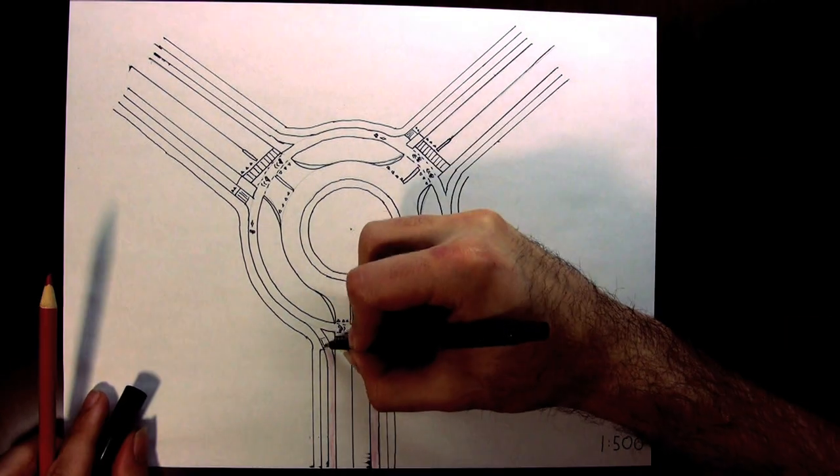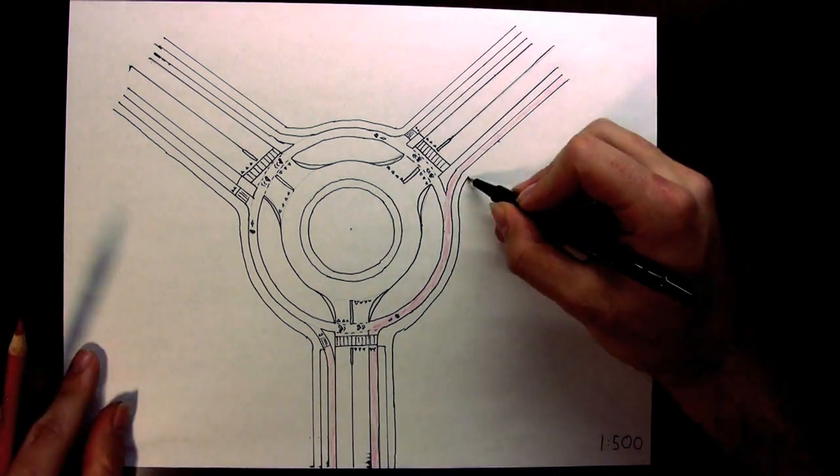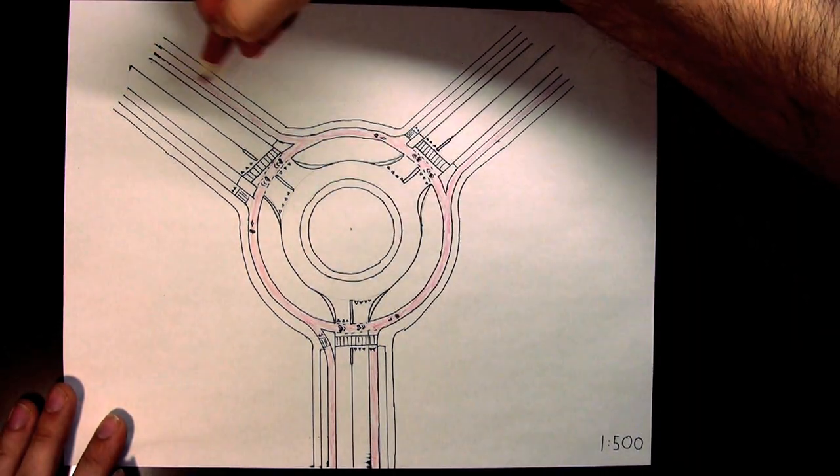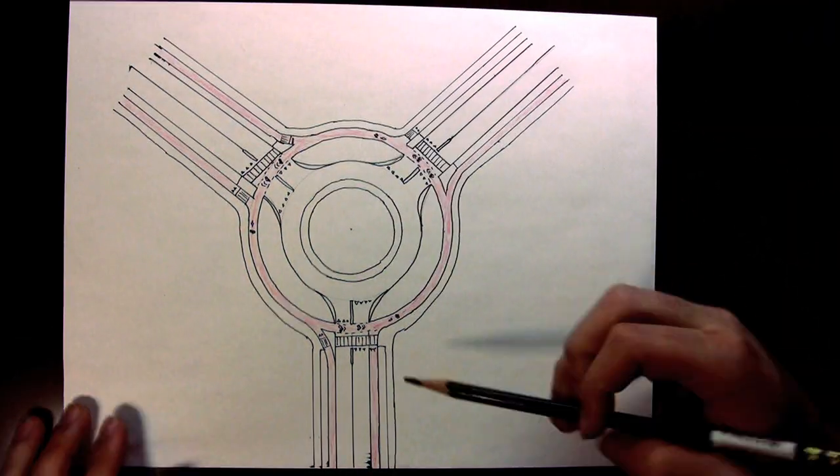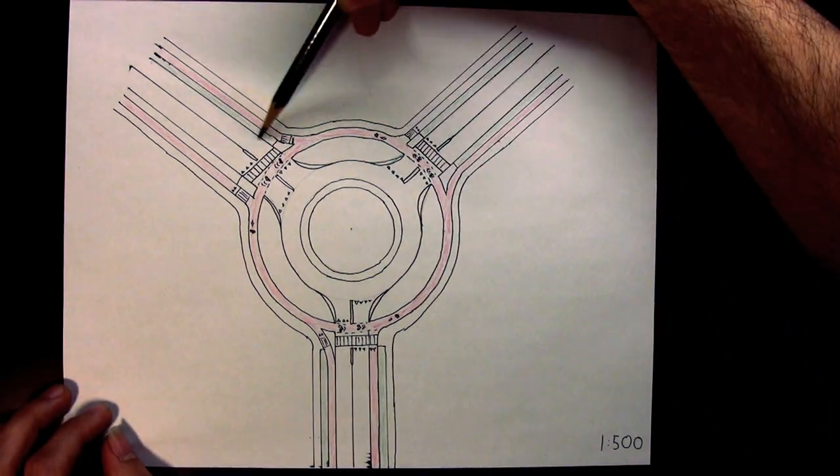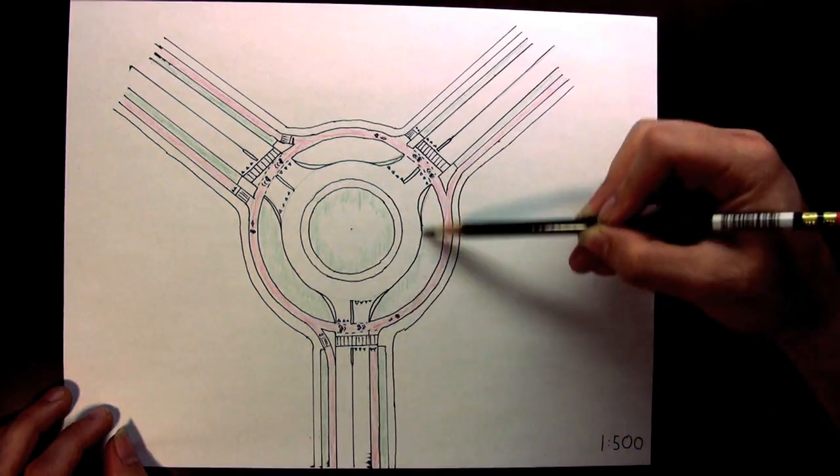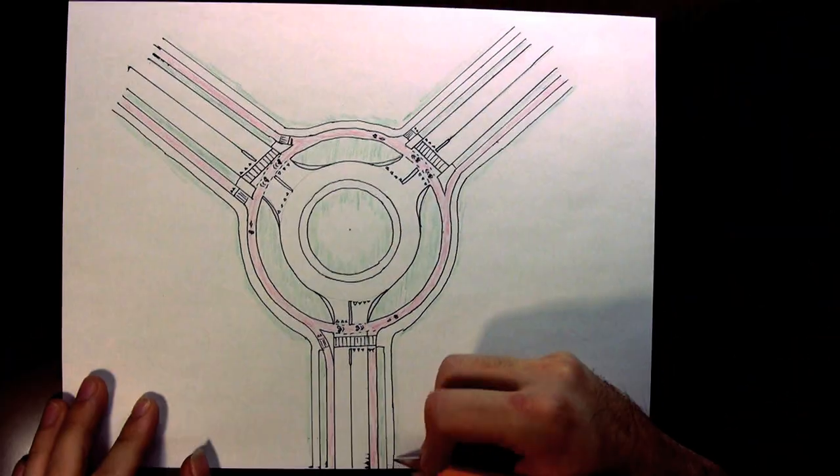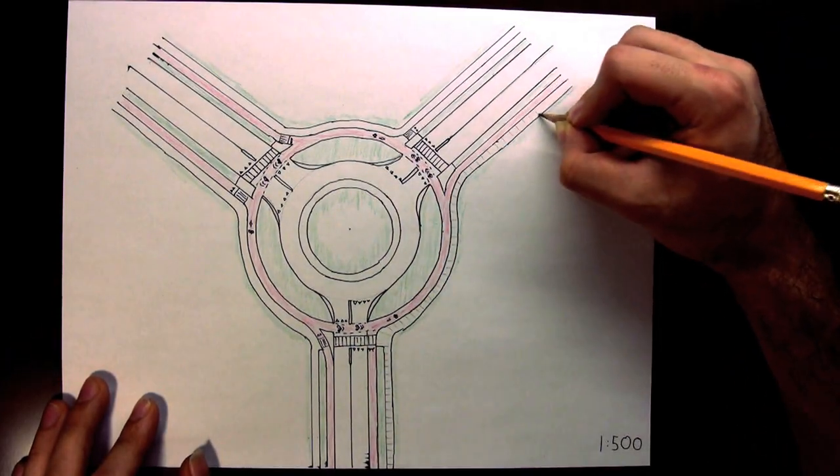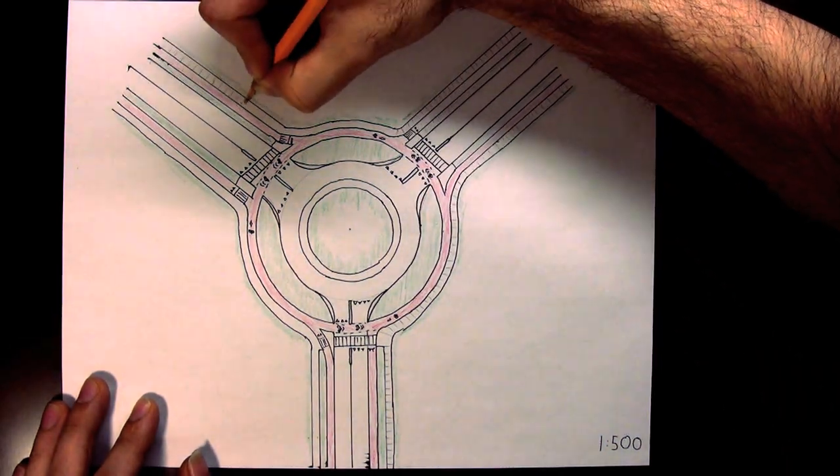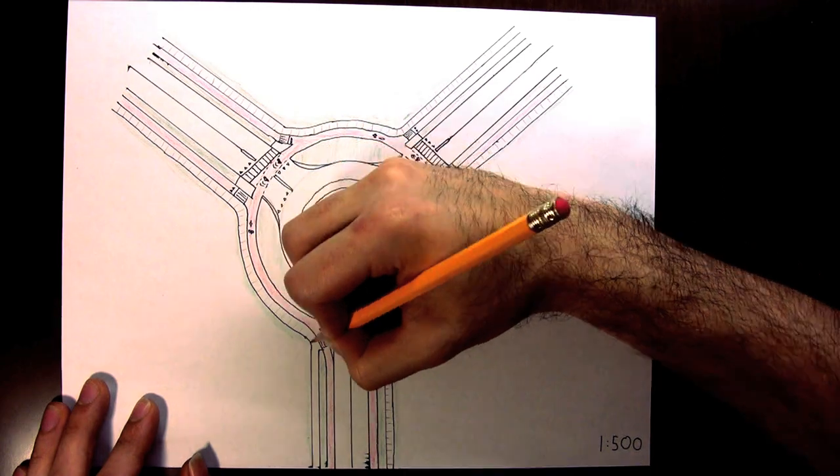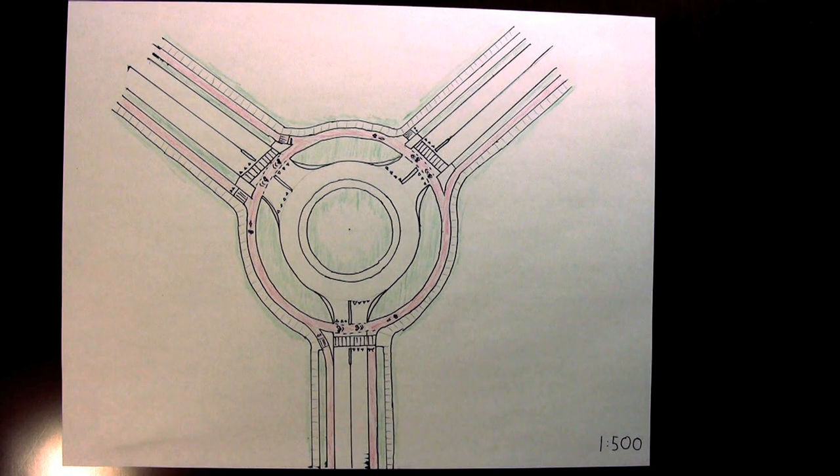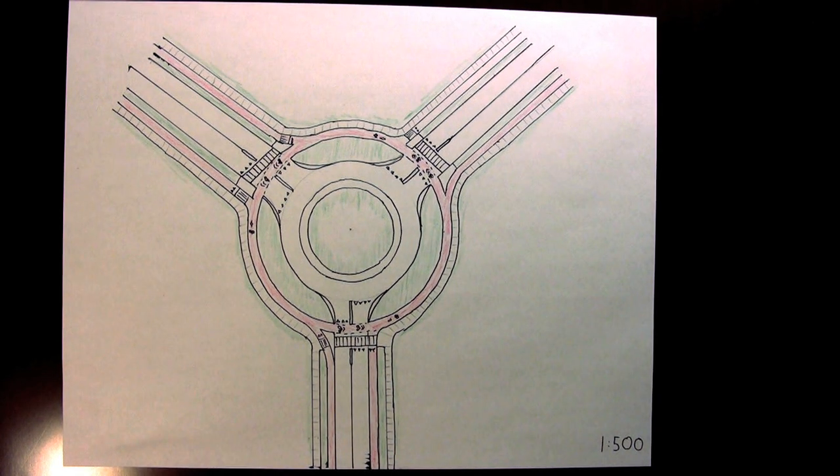Now I'll just add some color. There we go, now I've got a handy diagram to show the traffic department next time they tell me that the bicycle lanes need to suddenly end when approaching a roundabout.